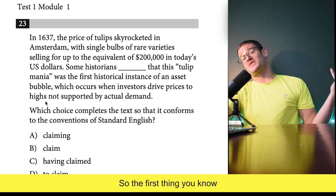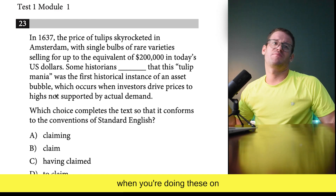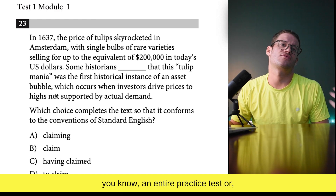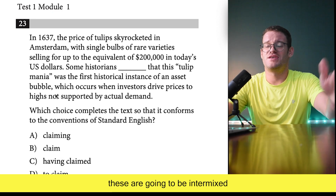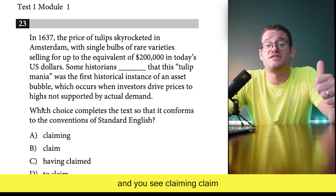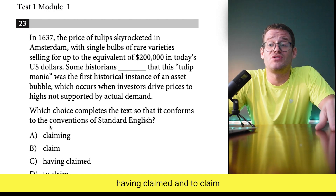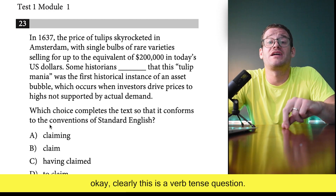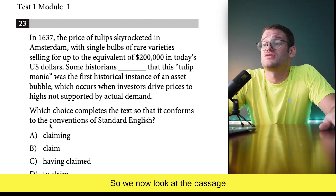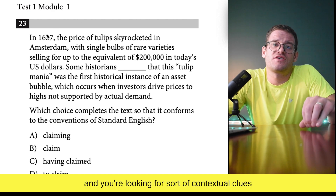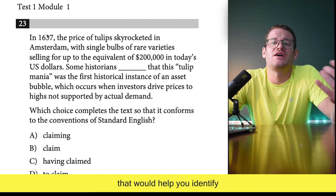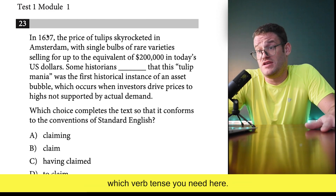When you're doing these on a practice test or the real test, they'll be intermixed with different question types. You look at your answer choices and you see 'claiming,' 'claim,' 'having claimed,' and 'to claim' — you think, okay, clearly this is a verb tense question. So you look at the passage for contextual clues that would help you identify which verb tense you need.